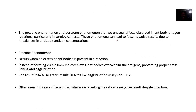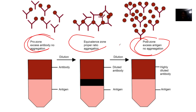The prozone phenomenon and postzone are two unusual effects observed in antibody-antigen reactions, particularly when talking about serological tests. This phenomenon can lead to false negative results — the reaction is there, but you can't pick it up simply because an antigen or antibody is in excess.